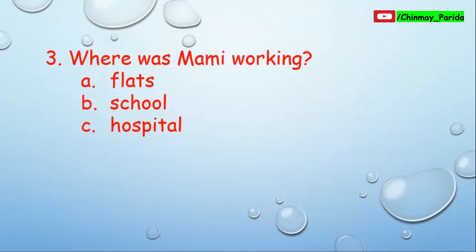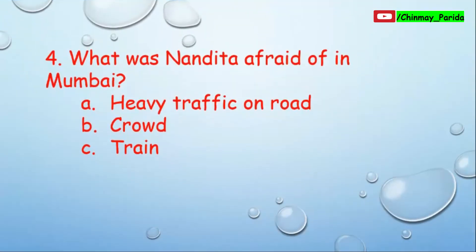Question number three: Where was mommy working? Option A: flats. Option B: school. Option C: hospital. Nandita's mommy used to work in flats, so option A is the correct answer.